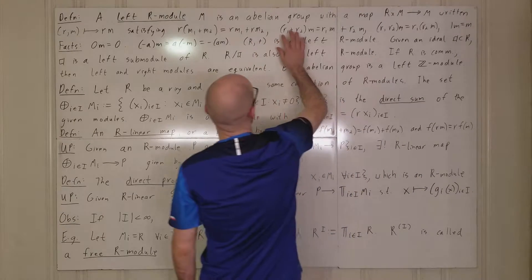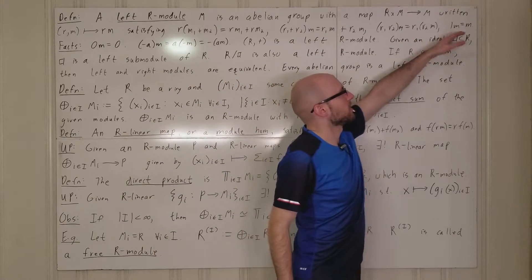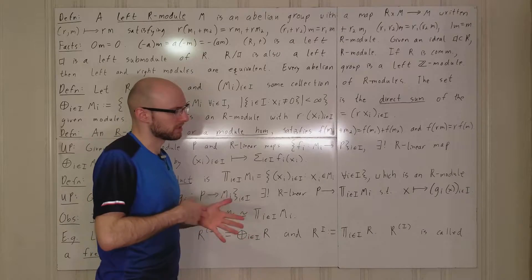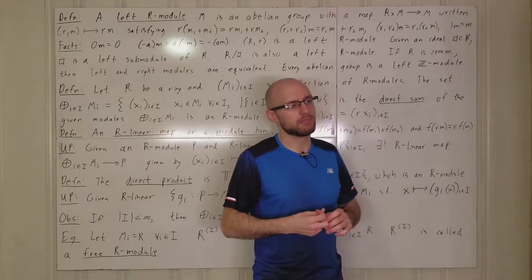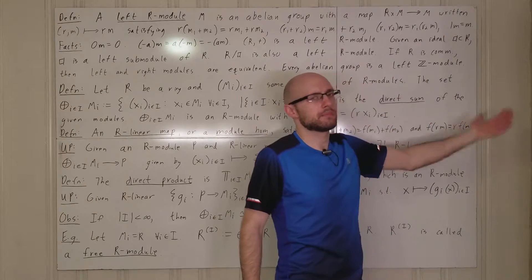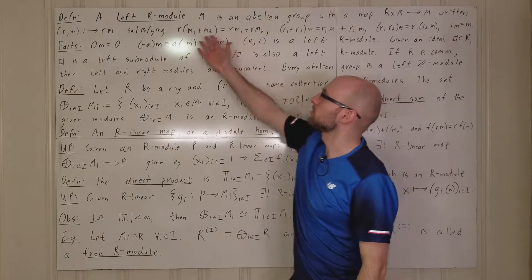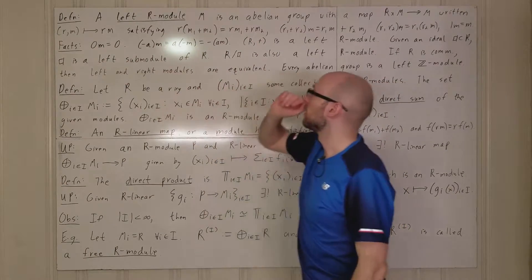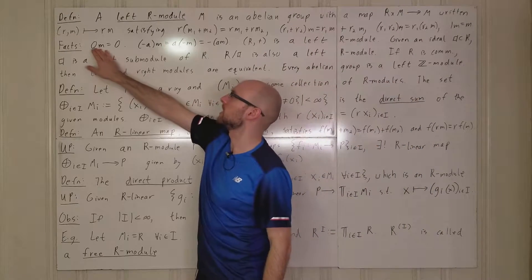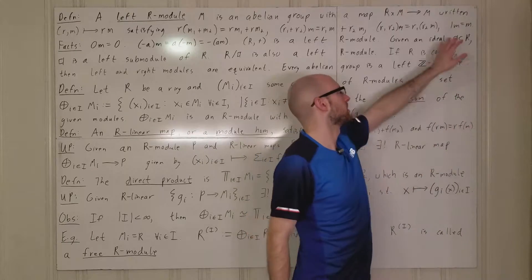The action satisfies: r(m1 + m2) = rm1 + rm2, and similarly for two elements in R. With multiplication in a ring being a monoid, you always have to be careful with definitions involving one. Here we have to state that 1·m = m. From this condition you can prove that 0·m = 0.